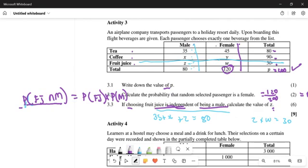Let's find fruit juice and male. We go to males and then go to fruit juice. Where do these two things intersect? What is the probability there? It's Z over 200, multiplied by - it's equal to probability of fruit juice.